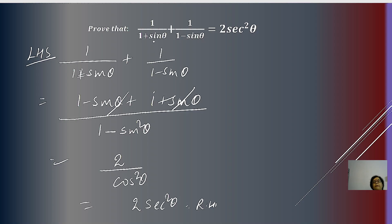This can also be done by multiplying and dividing the first term by (1 - sin θ) and the second by (1 + sin θ), with denominator 1 - sin²θ in both cases. Ultimately it comes to the same result and you get the right-hand side.